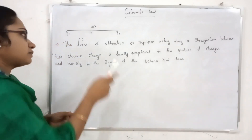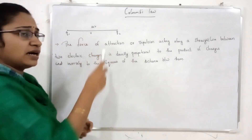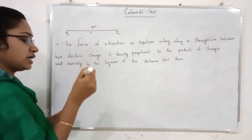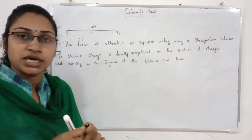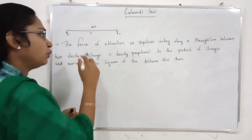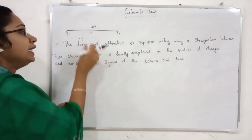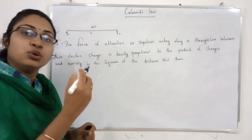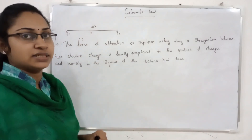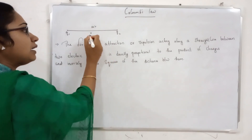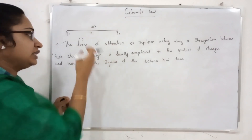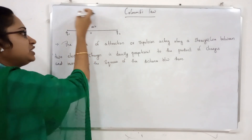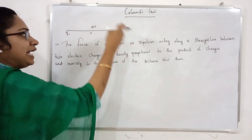Now, let's take a look. Here are two charges, Q1 and Q2. Q1 and Q2 are two point charges. If you are a point charge, it is a very small charge. We place this on r distance.